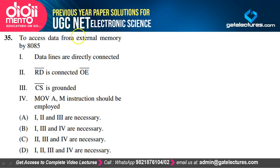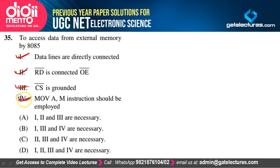To access data from external memory by 8085: data lines are directly connected (correct); RD̄ is connected to OĒ (correct); CS̄ is grounded (correct); MOV AM instruction is employed (correct). Option D is correct.